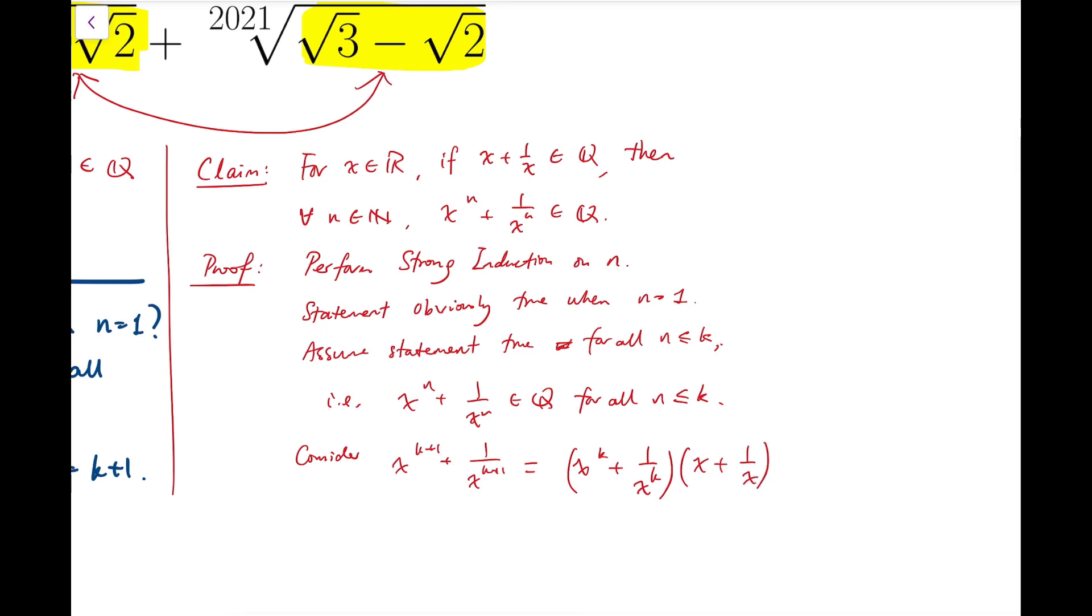This will give x to the k plus 1 plus 1 over x to the k plus 1, but it's just part of it. It gives an extra term of x to the k minus 1 plus 1 over x to the k minus 1. So I have to subtract it to make both sides equal.